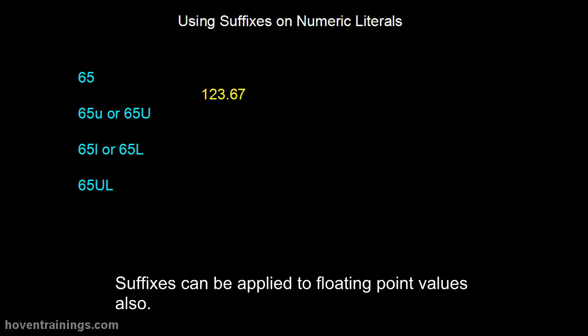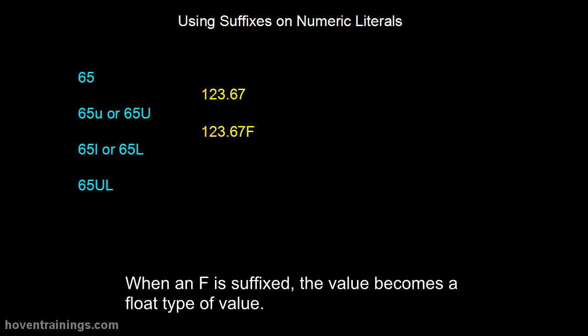Suffixes can be applied to floating point values also. This value is without any suffix. Compiler treats it as a double value. When an f is suffixed, the value becomes a float type of value.